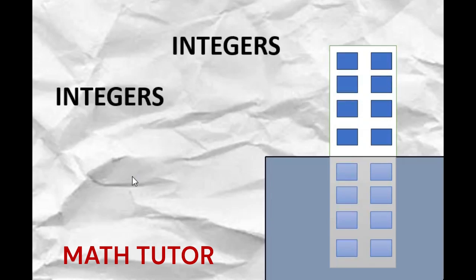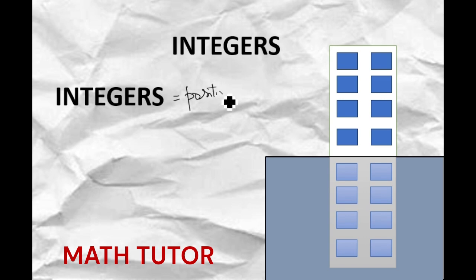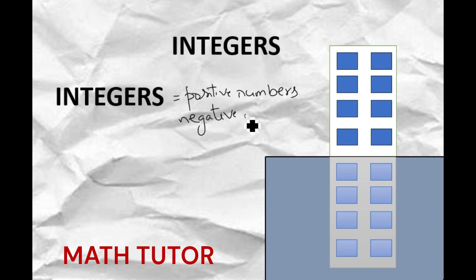Welcome to Math Tutor. Today we are going to understand about integers. What are integers? Integers are numbers. They consist of positive numbers, negative numbers, and 0. All these numbers are called integers.